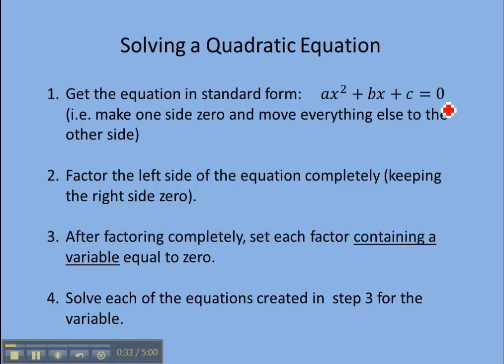You can tell it's a quadratic equation by the highest power on x being an x squared. Once you've done this, the next thing you want to do is factor the left side of the equation completely. After factoring, in step three, we're going to set each factor containing a variable equal to zero. It's important that you look at this part that's underlined, containing a variable. If it's just a number, then you just can ignore it. And then step four, solve each of the equations that we just created in step three for the variable.